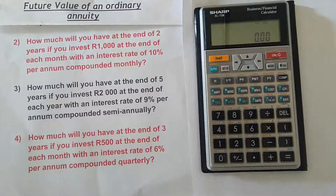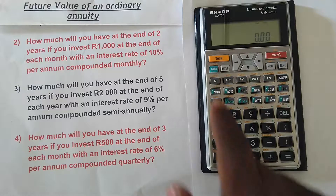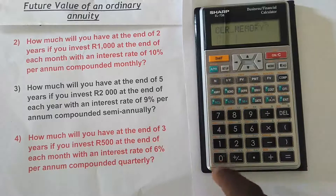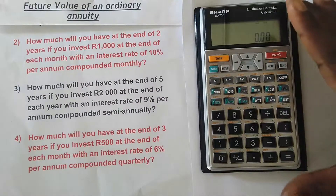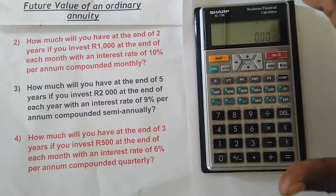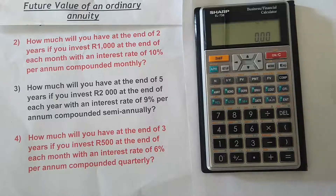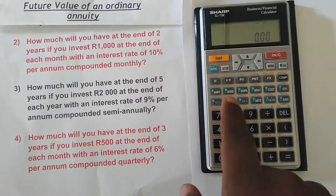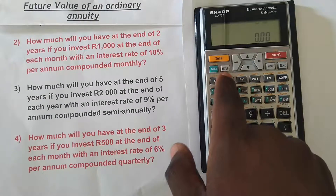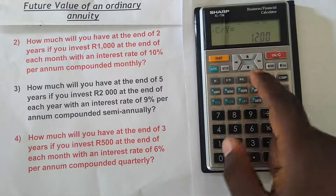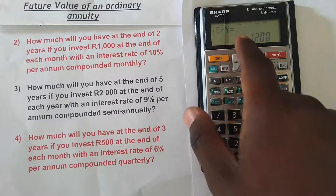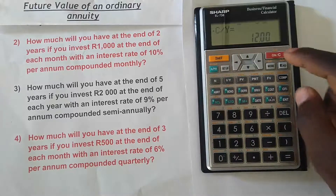First, with the financial calculator, let's clear our memory: second function, alpha, zero, zero. We know the payment occurs monthly, and by default this calculator is compounded annually, so we need to change the compounding from annually to monthly. Press second function, then I/Y — you can see on top it says P/Y — then press 12 for monthly compounding and press enter. If you press the down arrow, the compoundings per year for the interest rate is also 12, so we are good.